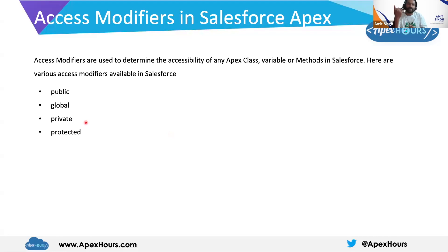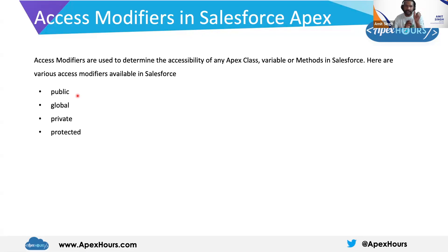What is the difference between public, global, private, and protected? Public, as its name indicates — if you create your class and put the access modifier as public, or you create your variable or your method as public, that means that class or element can be accessed outside of that class.